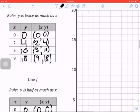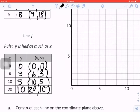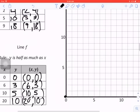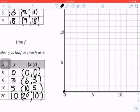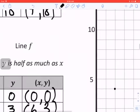Part A says construct each line on the coordinate plane above. So building Line E, we've got the first point at (0,0) which is right there. We've got our second point at (2,4), so 1, 2 spaces in, and then 4 spaces up.